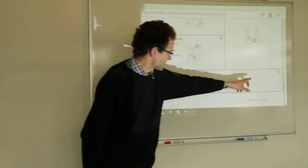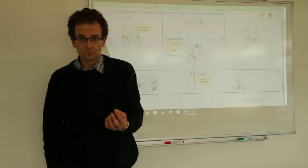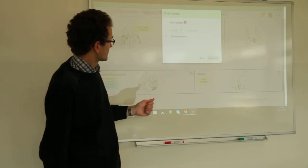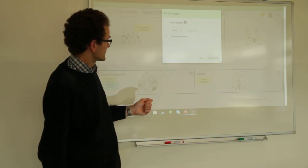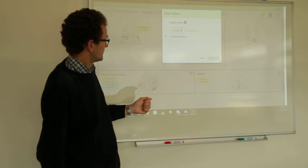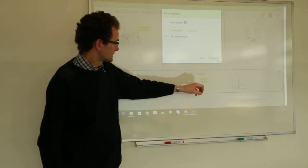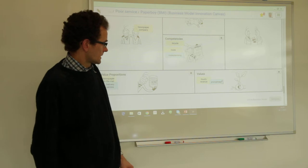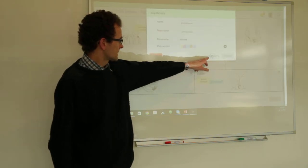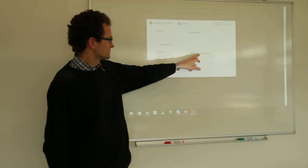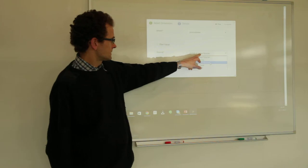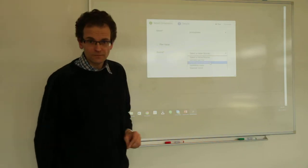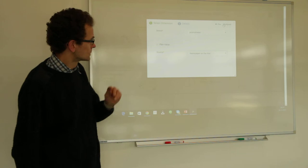Now we add another value — let's say the value promptness, as I mentioned. We create the mapping. It's not a planned value, but let's say it's a value that is delivered with the value proposition newspaper on the map, to the customer.